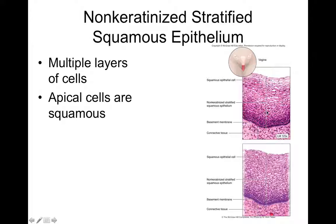Keratinized stratified squamous epithelium is found in skin. Non-keratinized stratified squamous epithelium is found in the anal cavity, vagina, and oral cavity. It makes sense in the mouth too — if you're chewing food, you don't want a weak epithelium because that food could just tear up your mouth.